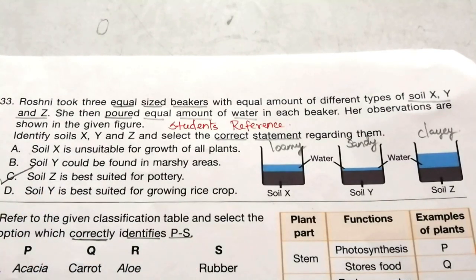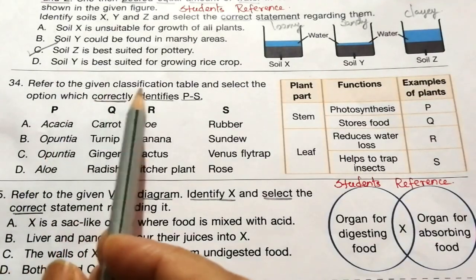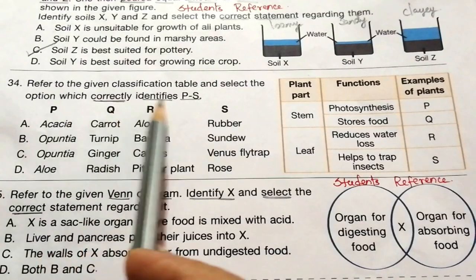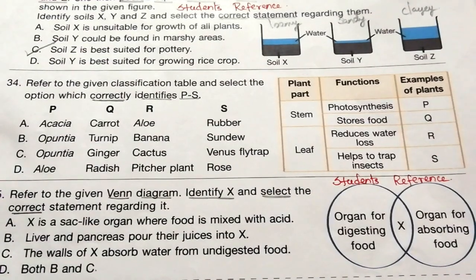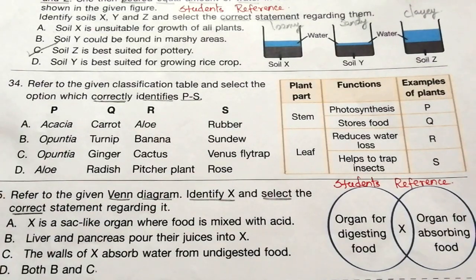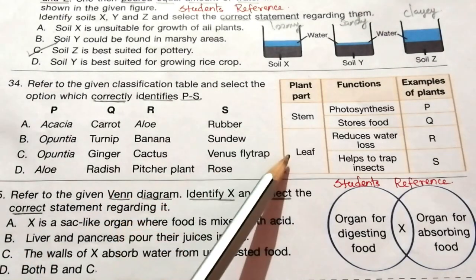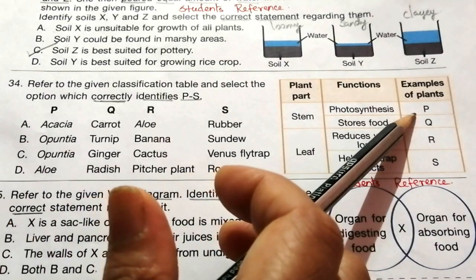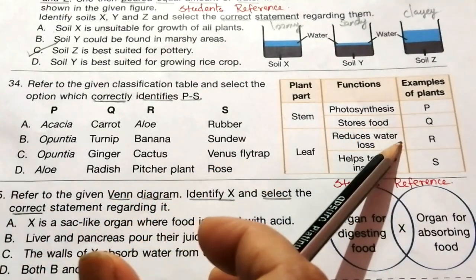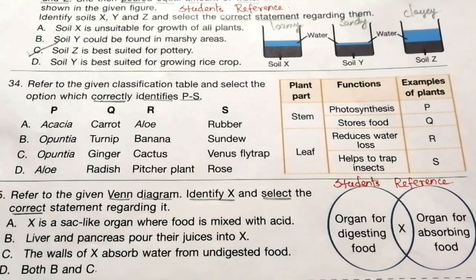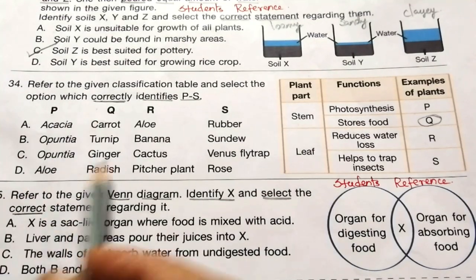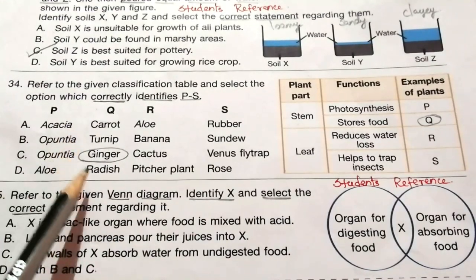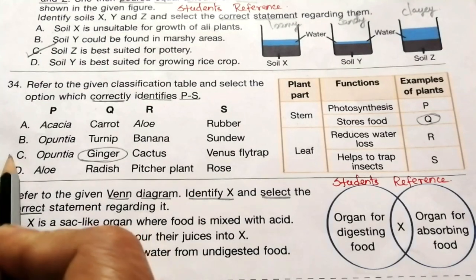Question 34: Refer to the given classification table and select the option which correctly identifies P and Q. Plant parts are stem and leaf. Functions include: photosynthesis, P (stores food), Q (reduces water loss), R (helps to trap insects). Stem stores food — the correct answer for Q is ginger, because carrot, turnip and radish are root foods. Our answer is C.